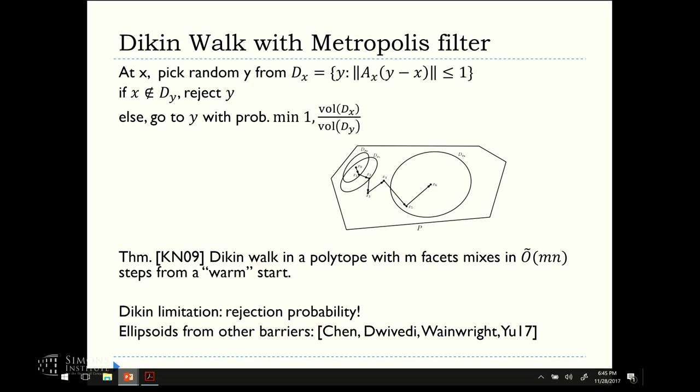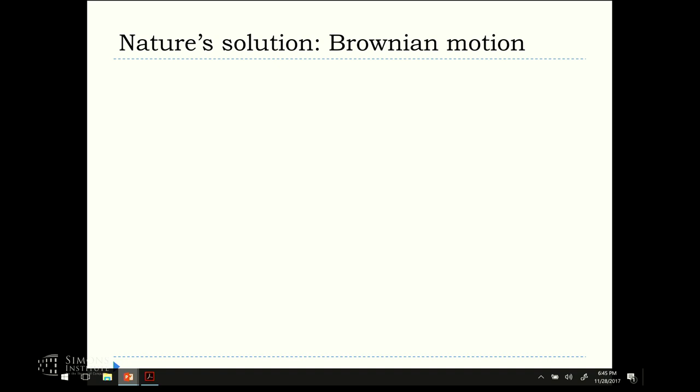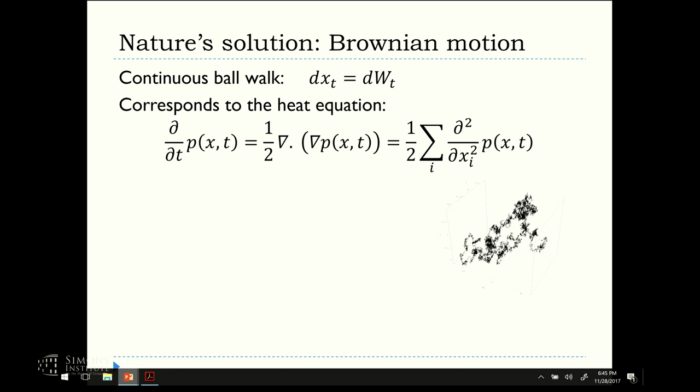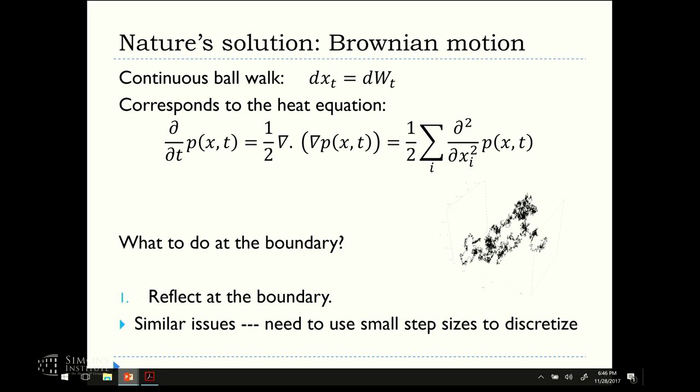So we go back and ask, how does this actually happen in, let's say, nature, that would be Brownian motion. We want to make the step sizes larger, but let's do the opposite and make them infinitesimally small. So, that would be Brownian motion. That's the heat equation, the way it dissipates. But what do we do when we have boundaries? We have to come up with something. But you can reflect, you can have other boundary conditions. If you do reflection, we run into very similar issues. You'll have to use very small step sizes when you discretize in order to maintain your target stationary distribution. The other option is just remove the boundary.